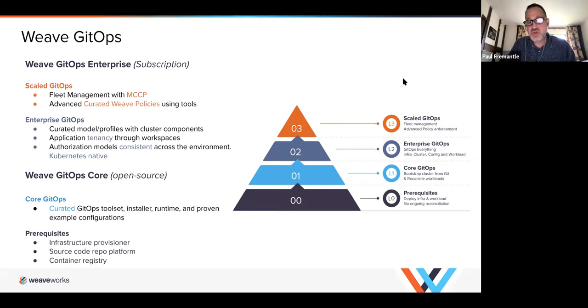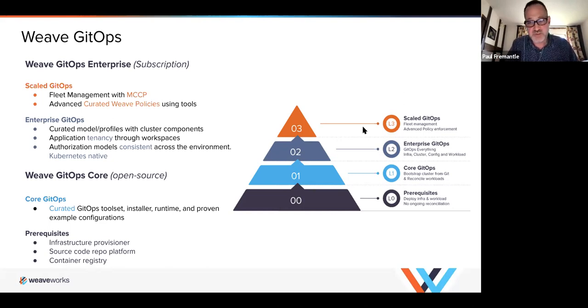Our product stack is very much based around this maturity model. Weave GitOps Core is aimed at that application management and deployment scenario. Weave GitOps Enterprise is aimed at level two and level three — basically managing clusters and fleets. We're going to show you parts of that today. We don't have time to demo it all, but we'll talk about it and show demos of the really key parts.